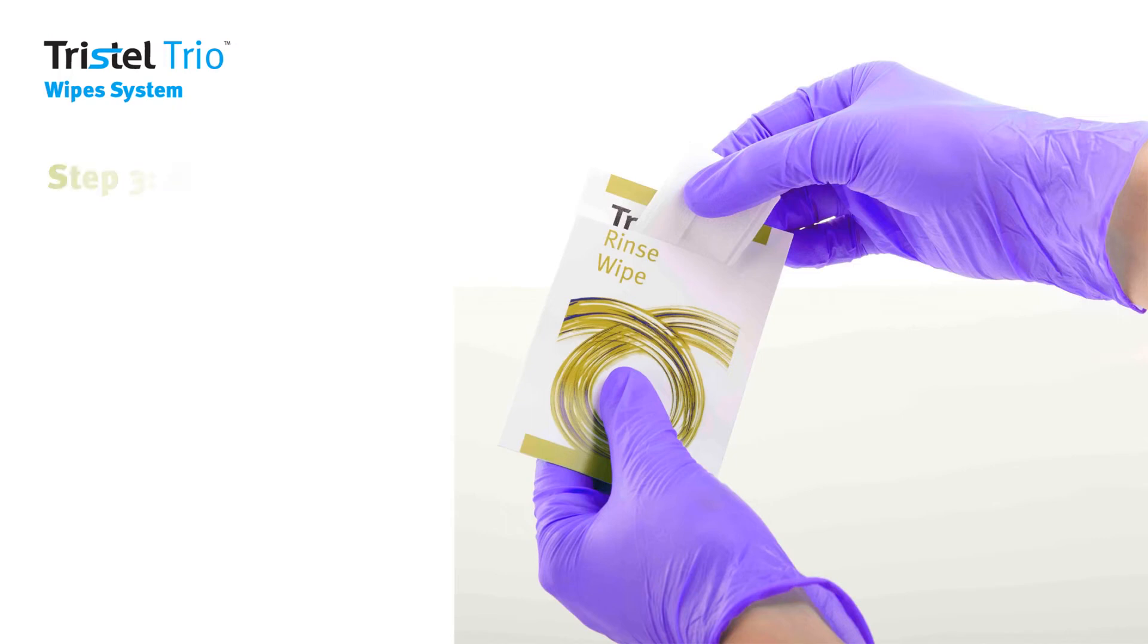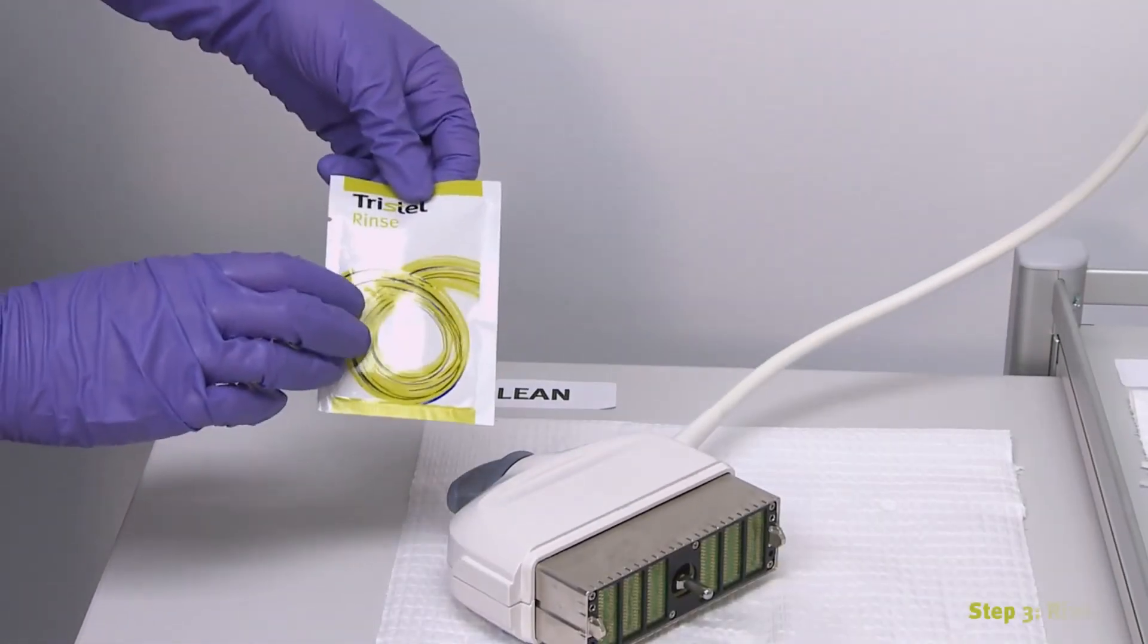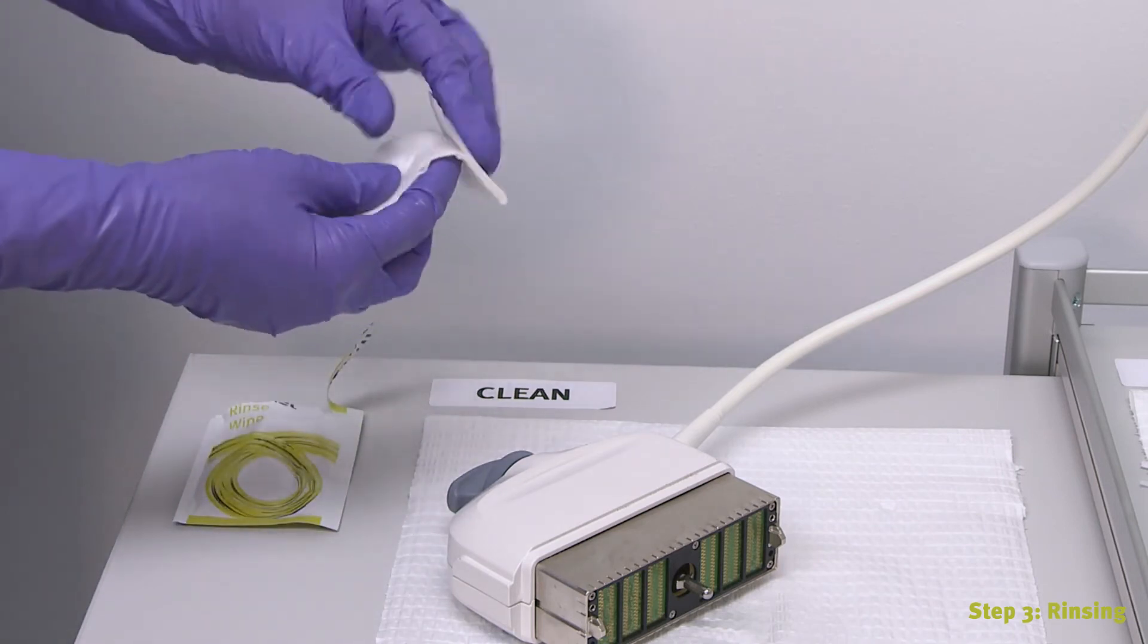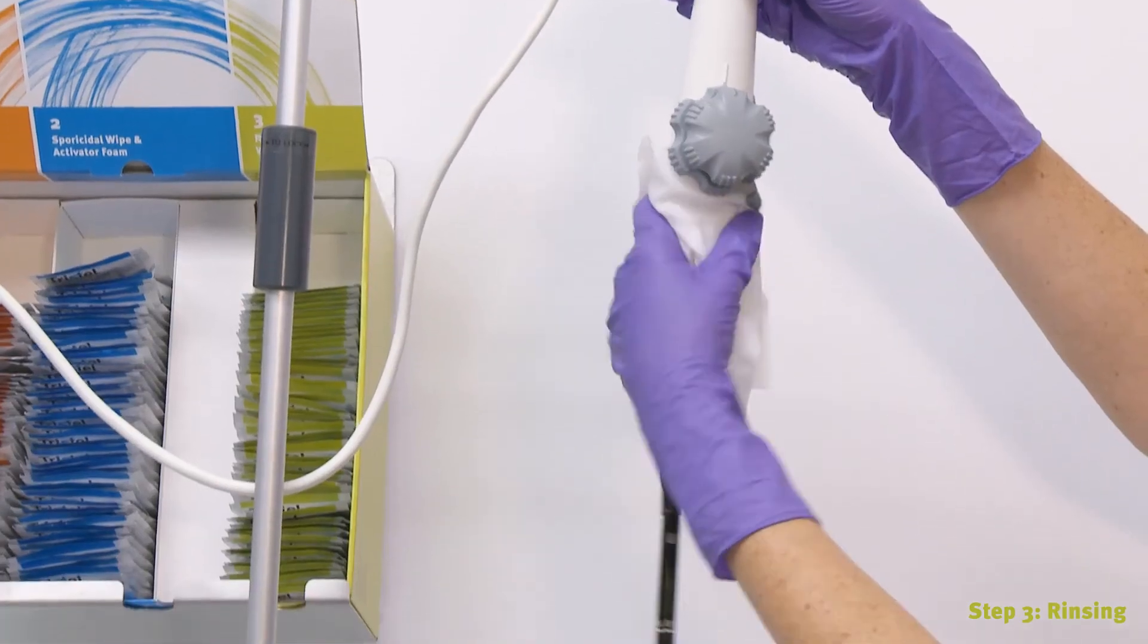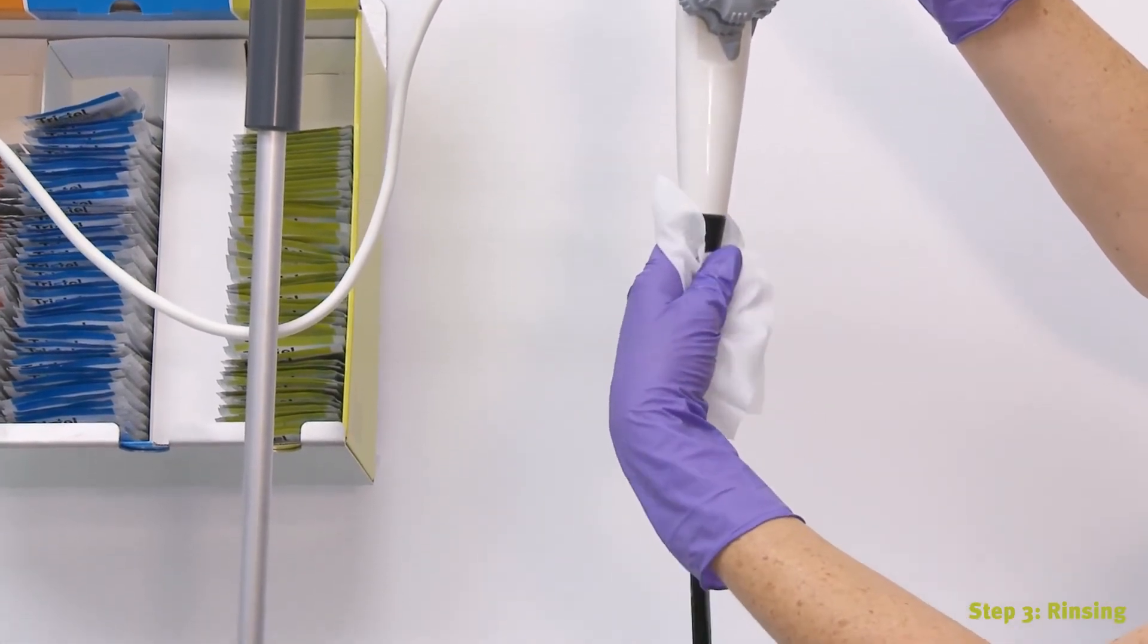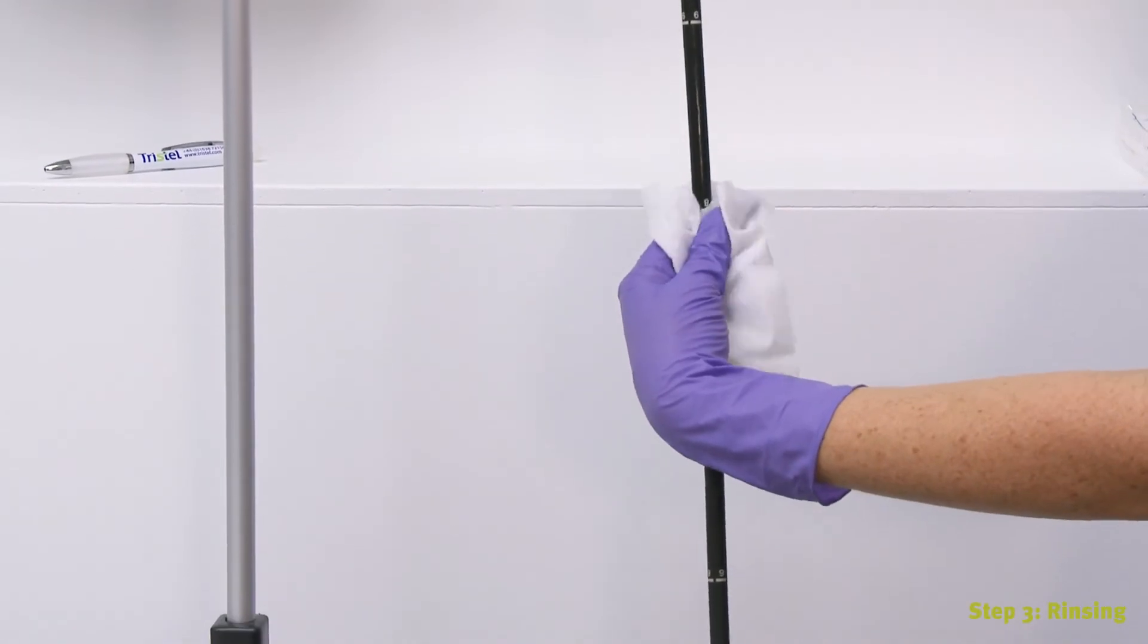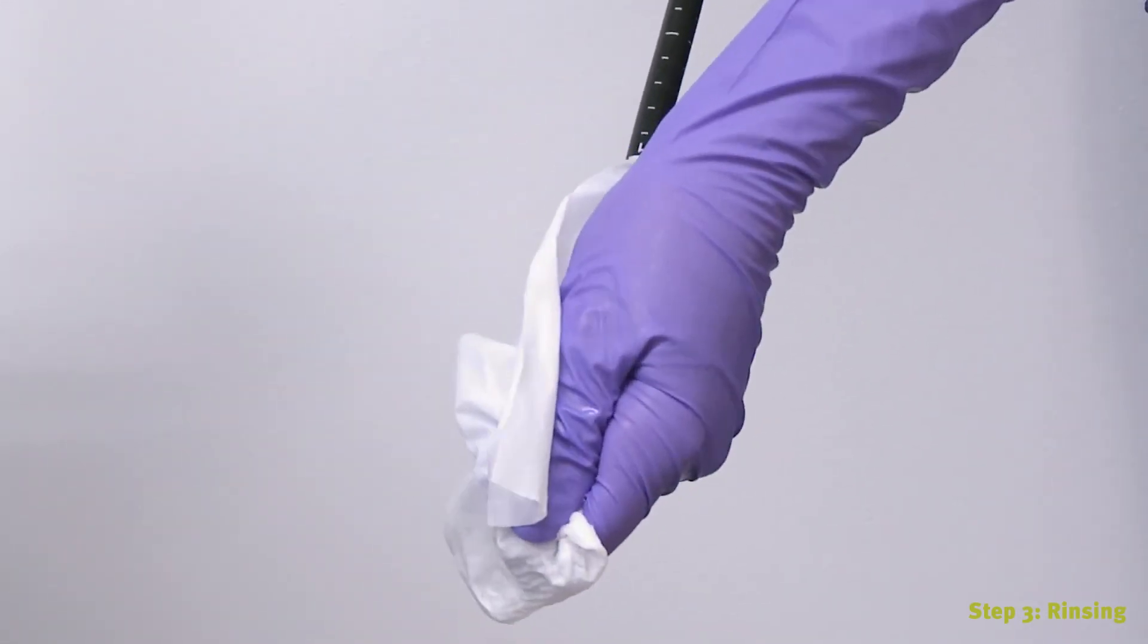The third step in the decontamination process is rinsing. The Tristel Rinse Wipe is a sterile packed, non-woven wipe impregnated with deionized water and is CE marked and TGA approved as a Class 1 sterile device. Remove the wipe from its sachet and unfold it in the palm of your hand. Wipe the toe probe handle and insertion tube to remove excess foam. Allow the toe probe to dry naturally.